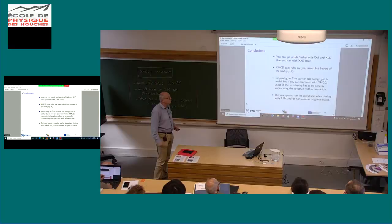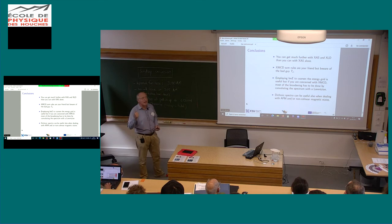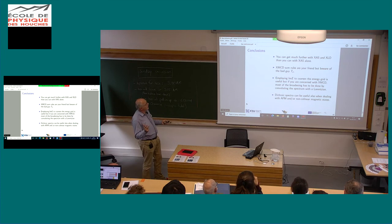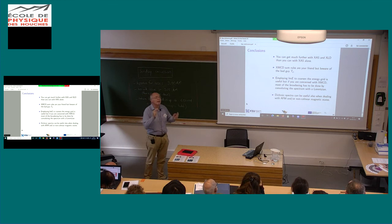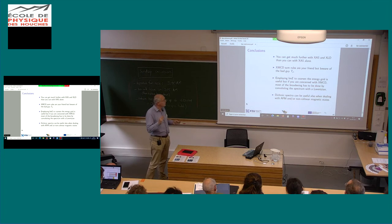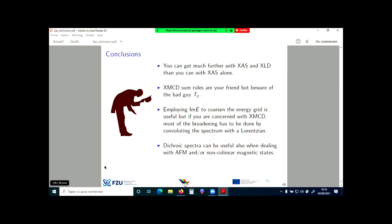To conclude: first, you can get further with X-ray absorption spectrum and X-ray linear dichroism than with XAS alone. Second, sum rules are your friend — however, before congratulating yourself, the Tₓ term is here to stay. Third, employing imaginary energy to coarsen the energy grid is convenient and fine to use, but if you are concerned with XMCD, most of the broadening has to be done by convoluting your calculated spectra with a Lorentzian. Fourth, dichroic spectra can be useful also when dealing with antiferromagnetic and non-collinear magnetic states. Thank you.